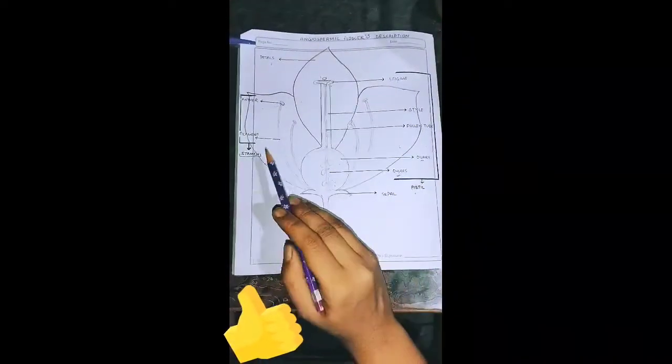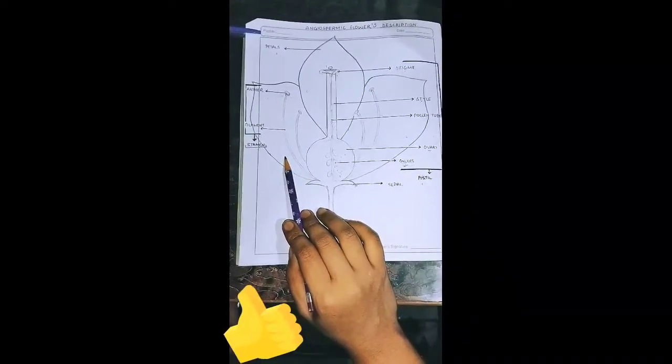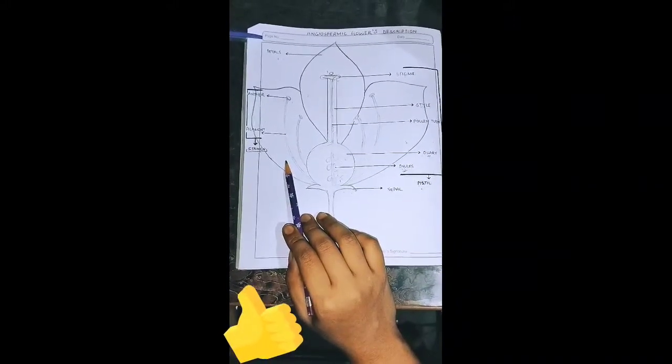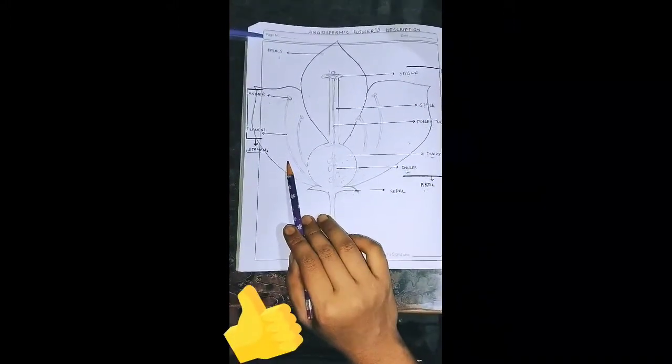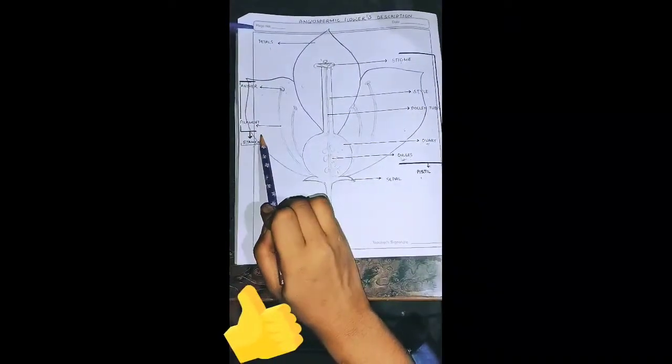Now, let's discuss the male reproductive system. Basically, the male reproductive system is called stamen. Stamen consists of mainly two parts: first part is our anther and second part is our filament.